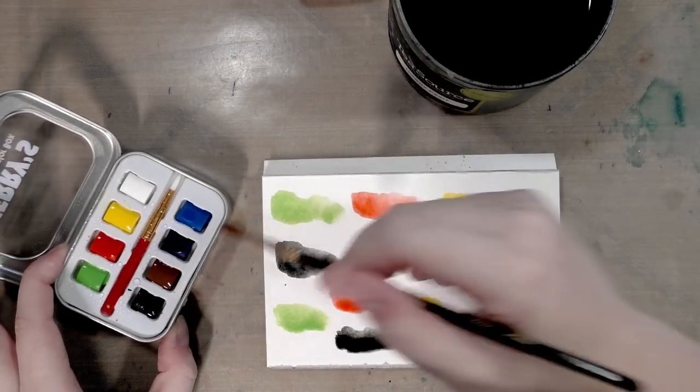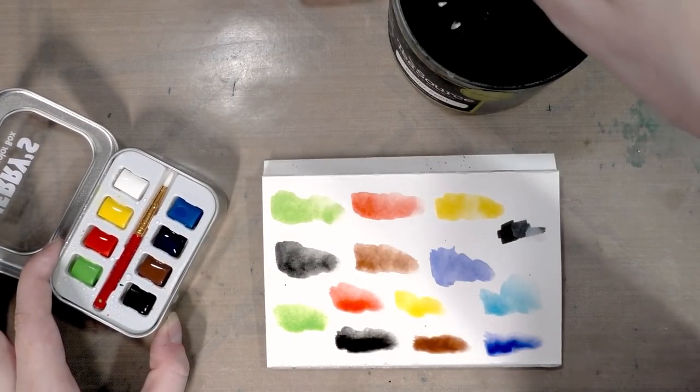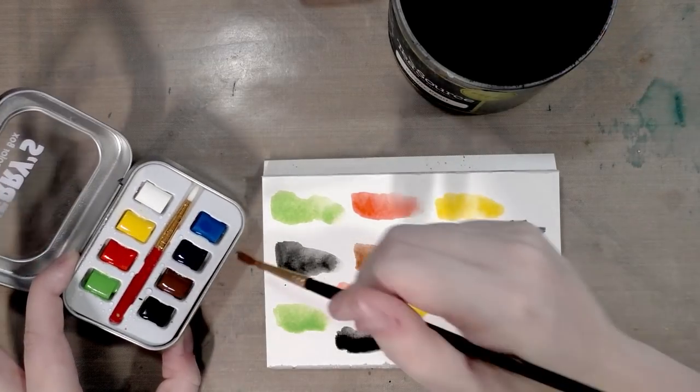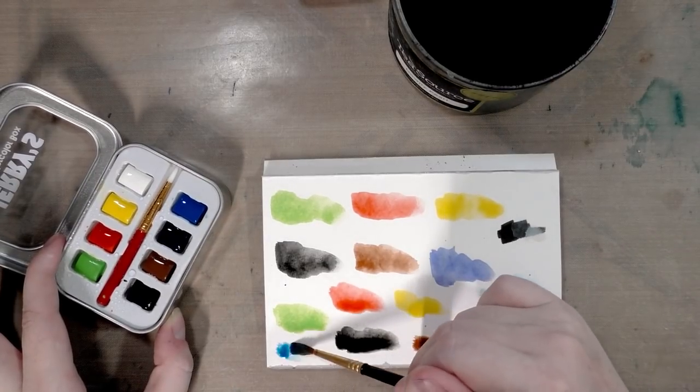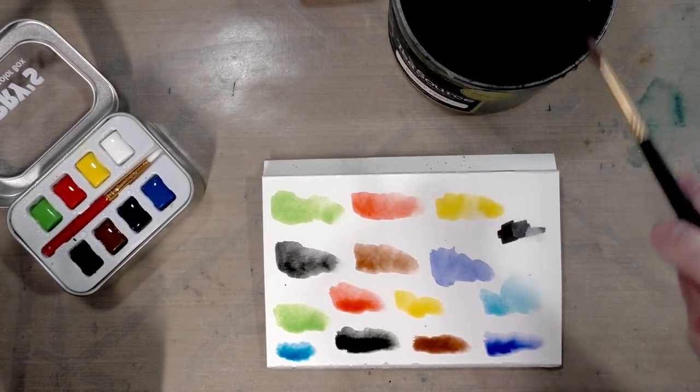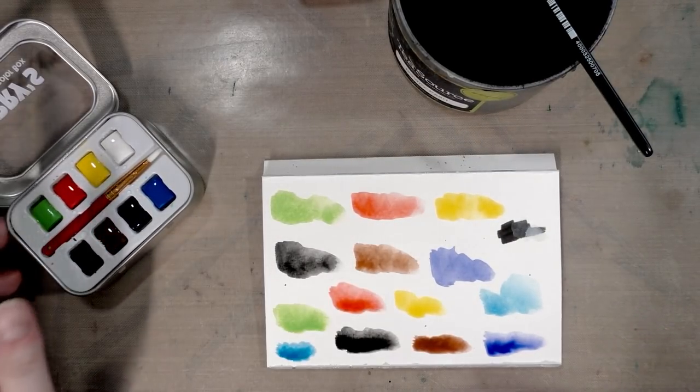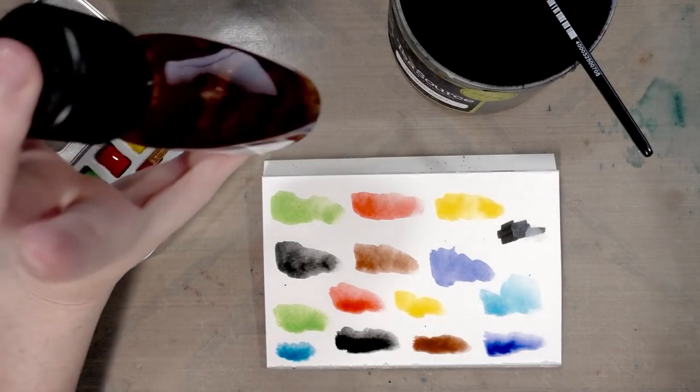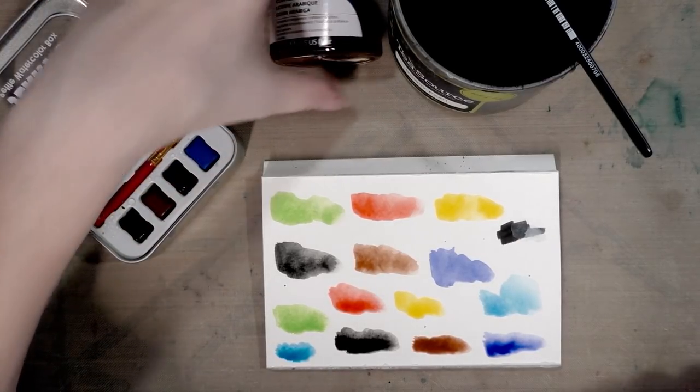She had said that it made them interesting to use because with cheap watercolors you don't normally get a lot of granulation. She was positing that the granulation was coming from the fact that these have a lot of pigment and not a lot of binder. I grabbed the gum arabic because she had suggested that I do a swatch test with the gum arabic and without the gum arabic.